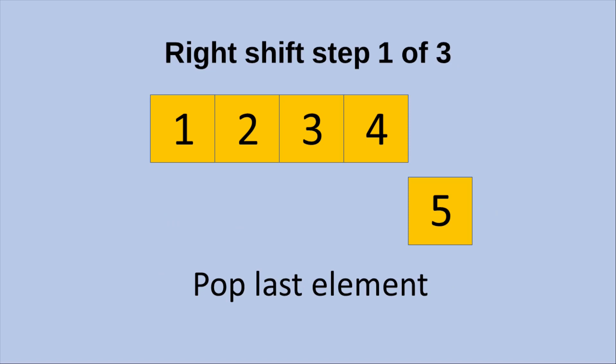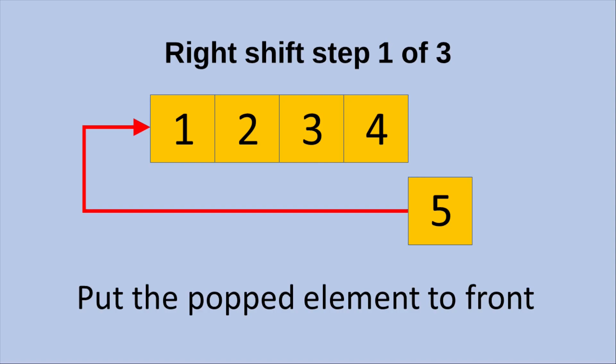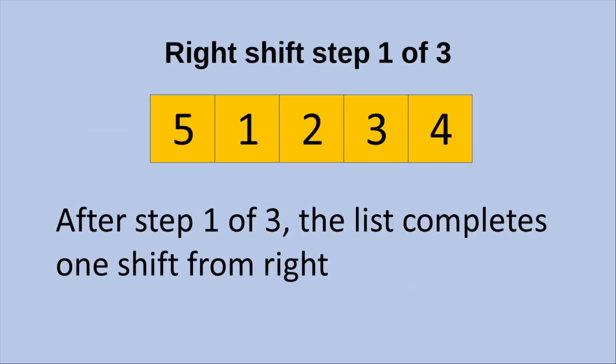In essence, we just need to shift the elements by three times. Now let us see the first step out of the three steps involved. The first step involves popping the last element from the list, so element number 5 is removed. Then I'm going to put the popped element to the front of the list, moving element number 5 to the front. After the movement of element number 5 to the first position, we have 5, 1, 2, 3, 4 as the ordered elements. After step 1 out of 3, the list has completed one shift from the right.